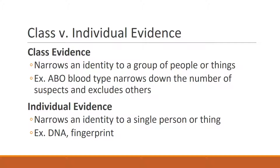Class versus individual evidence: class evidence narrows an identity down to a group of people or things. An example is your ABO blood type — A, AB, B, or O. You can narrow down the population, but that doesn't directly point to a specific person because many people share the same blood type. Individual evidence narrows identity down to a single person, such as DNA or fingerprints.